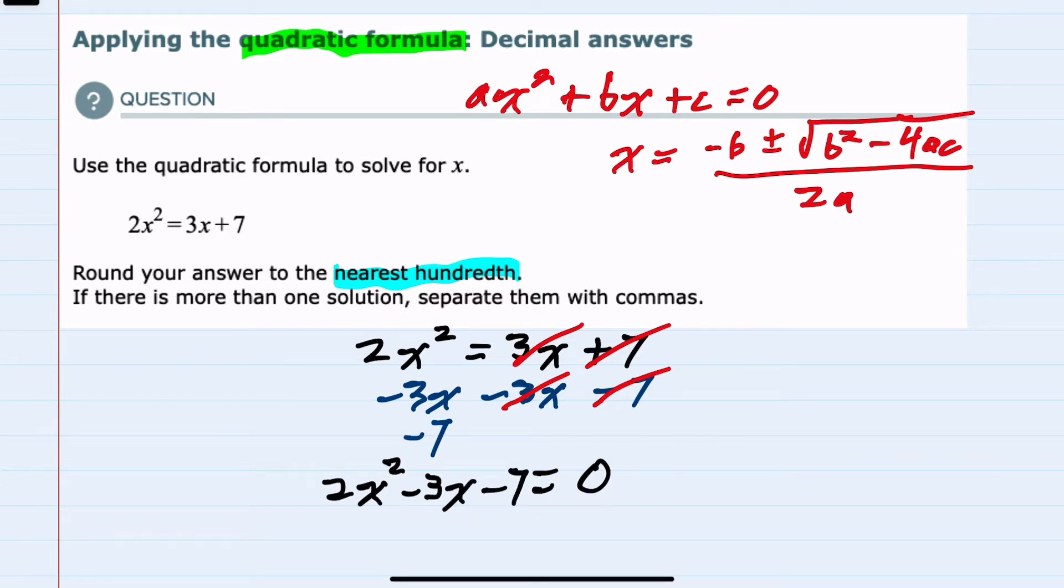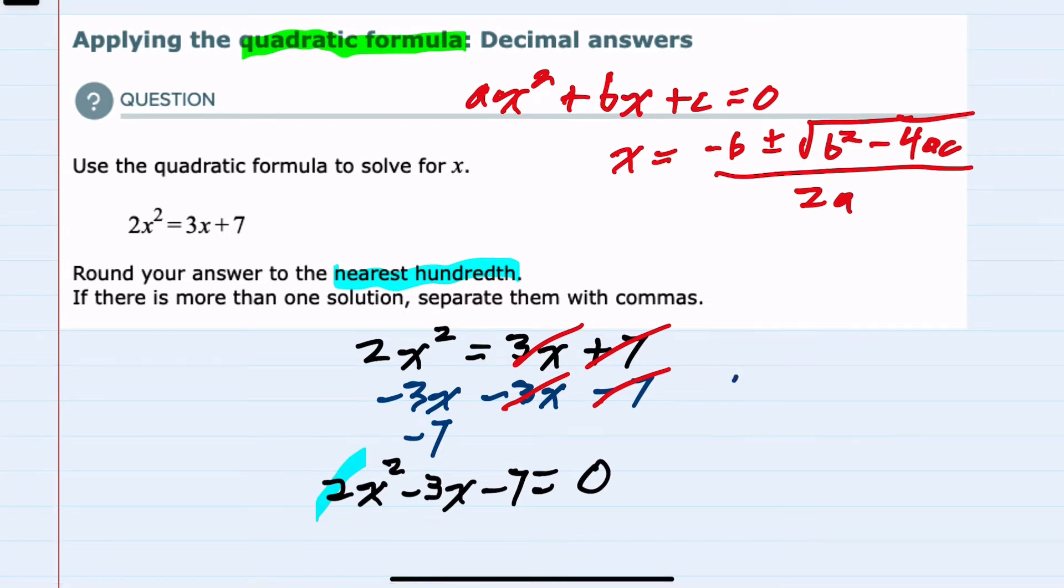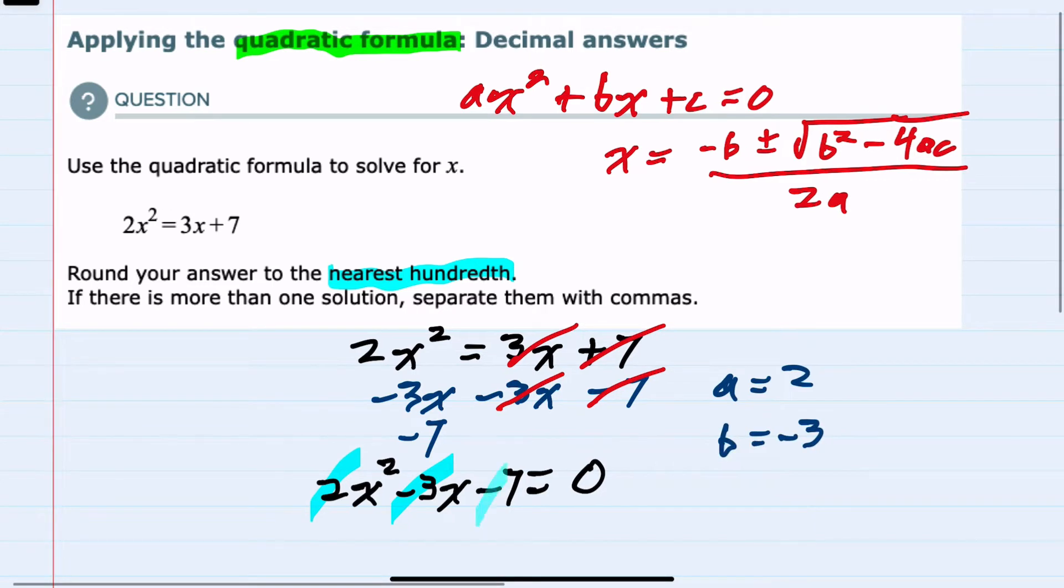To use the quadratic formula, we can now see that a equals 2, b equals negative 3, and c equals negative 7.